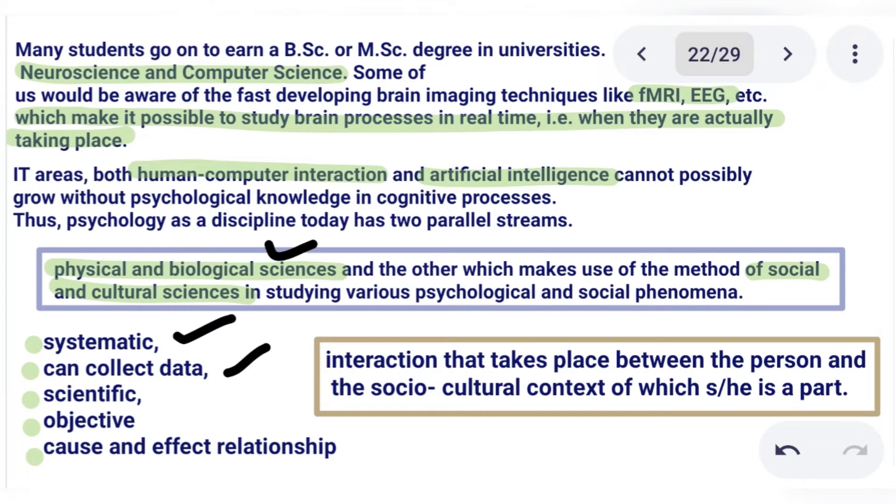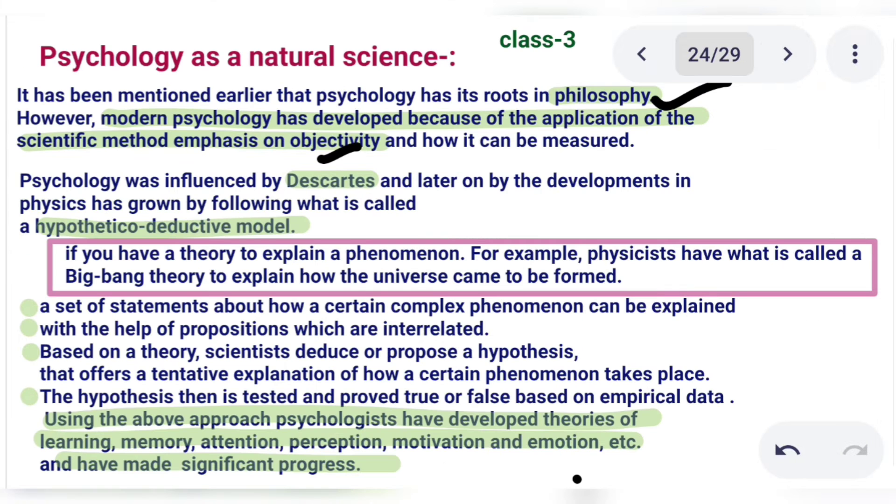Psychology has become systematic — you can collect data, it is scientific, and it is objective. So this is the same thing: modern psychology applies a systematic and objective approach.